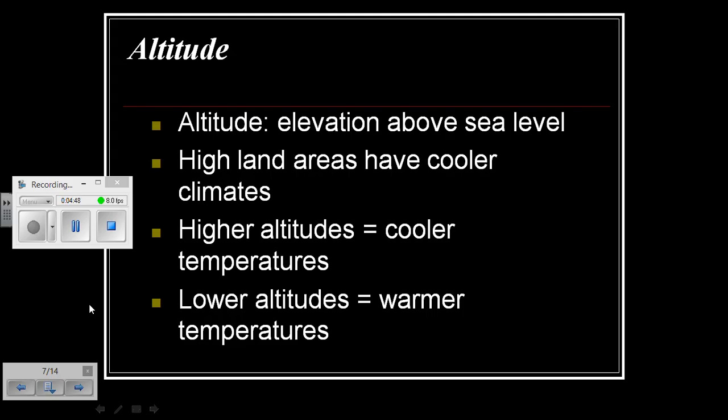Altitude is something you should be familiar with, but if not, hopefully I can shed light on it. When I think of altitude, I tend to think of mountains. Altitude refers to the elevation above sea level. Landforms with high altitude generally have cooler climates. When I think of a high land area such as a mountain, I think of snow caps or ice on top. Therefore, higher altitudes equal cooler temperatures, and lower altitudes equal much warmer temperatures.